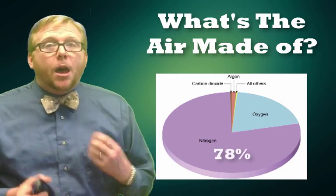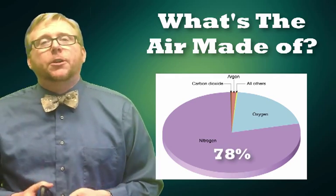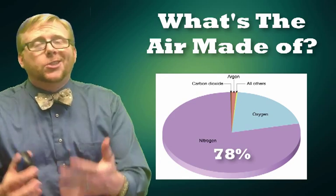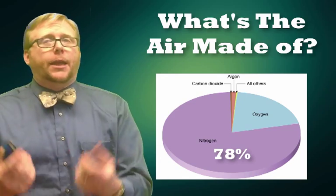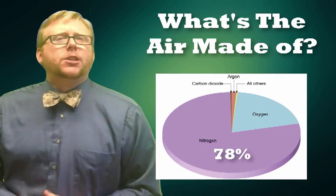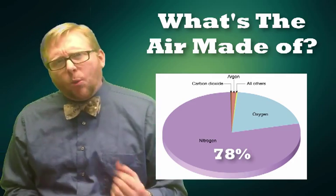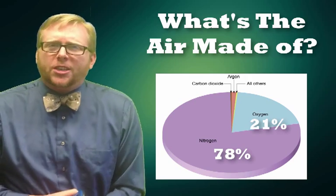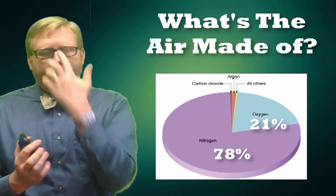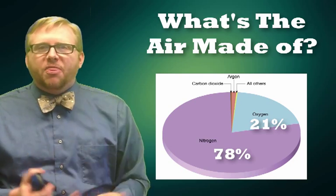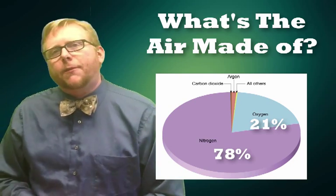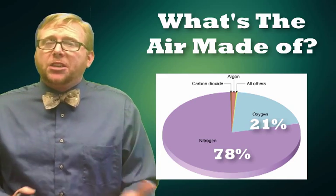About 78% of our atmosphere is actually something called nitrogen gas. And nitrogen gas really doesn't do anything — it's pretty much inert. You breathe it in, you breathe it out, it doesn't affect you. About 21% of our atmosphere is oxygen, the stuff we need for life. That's 99% of our atmosphere — nitrogen and oxygen.